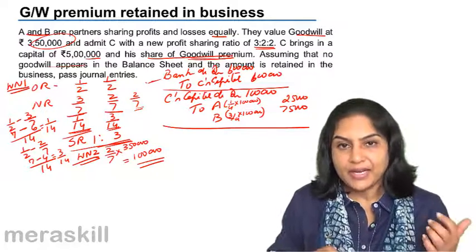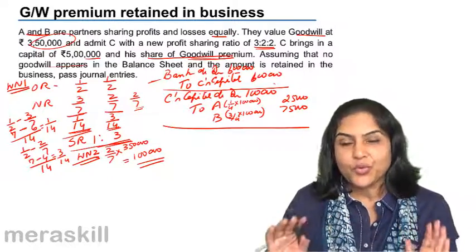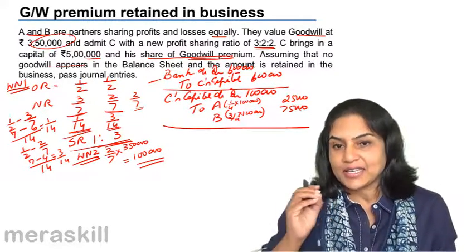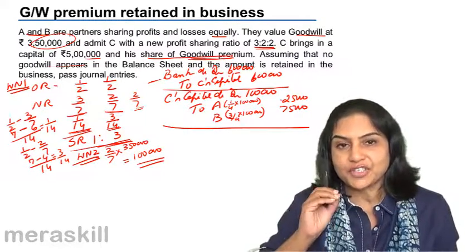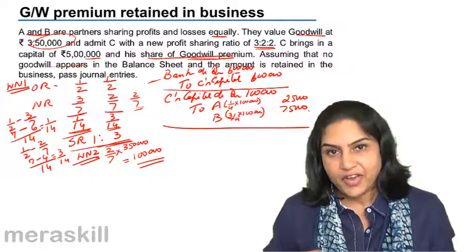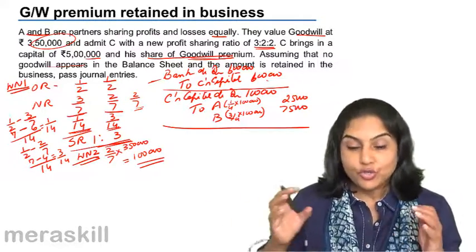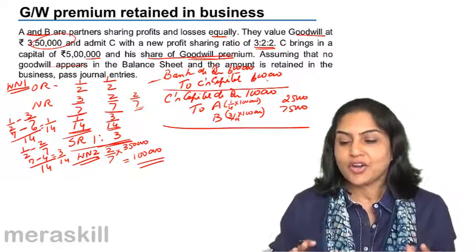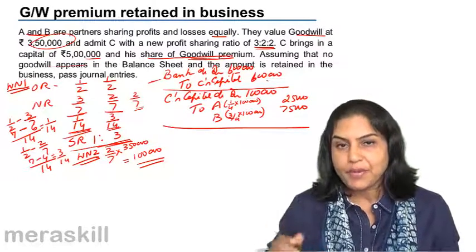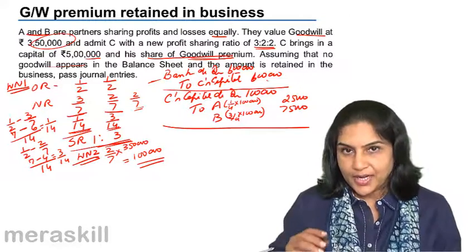What has happened: the bank balance has increased — cash resources in the business have increased. C's net capital credit is only 5 lakh, which is his capital contribution. A and B have had their capitals credited in the sacrificing ratio — A's capital account credited with 25,000 and B's capital account credited with 75,000. There is an increase in cash balance by 1 lakh, being the goodwill premium brought in by C.